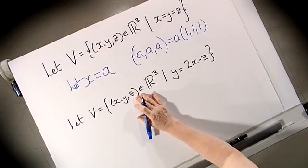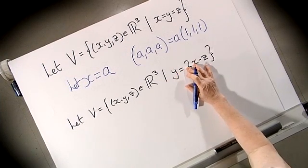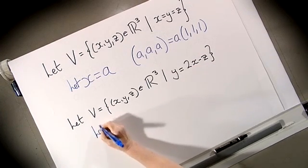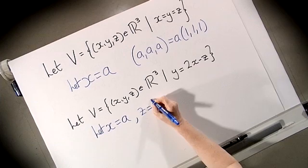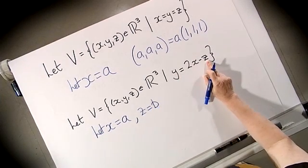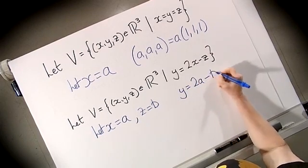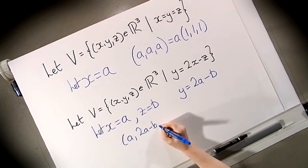So let's have a look at this second subspace. Again we're looking at (x, y, z) in R³, and this time the relationship is x + y = 2z. Between the three variables, once we know two of these we will know the third. So this time let x equal a and we're going to make z equal to b. Using this relationship we know that y is equal to 2a - b.